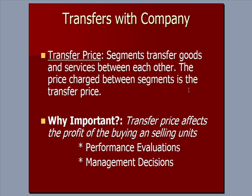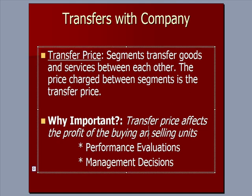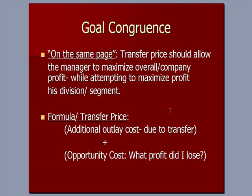The transfer price affects the profit of both the buying and selling units. Specifically, that transfer price is going to affect the performance evaluations of the managers working there, and also the decisions those managers make. What we need to consider in terms of the overall company is goal congruence — which is another way of saying: is everybody on the same page?